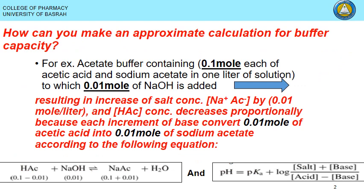To calculate buffer capacity, take an acetate buffer with equal amounts of sodium acetate and acetic acid at 0.1 mol. To this system we add NaOH at a concentration of 0.01 mol — a small amount of base — and we expect the pH to increase.